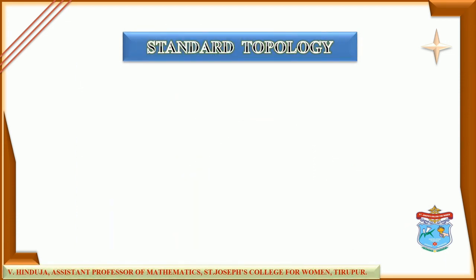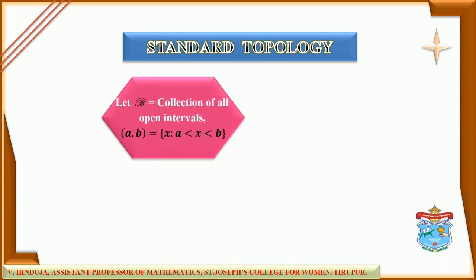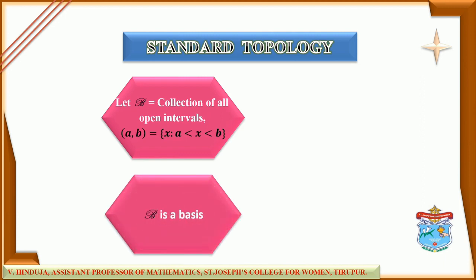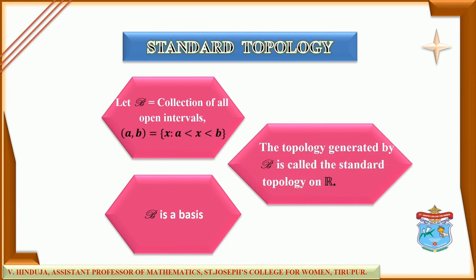Next, standard topology. Let us consider a collection, say script B, of all open intervals of the form (a, b). Then this collection script B is the basis for a topology, and that topology is called the standard topology on the real number set R.